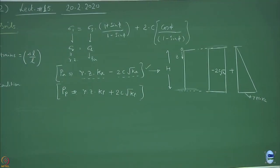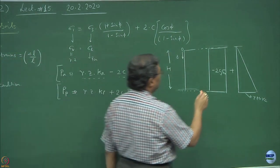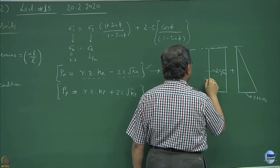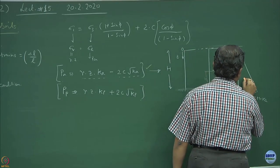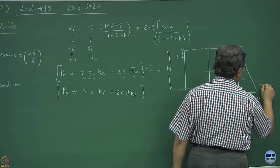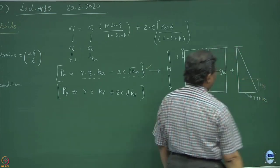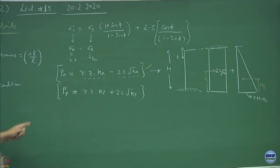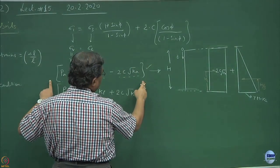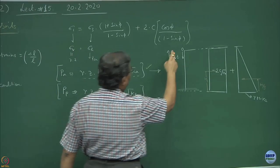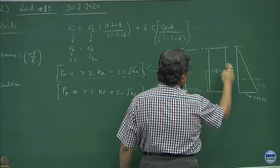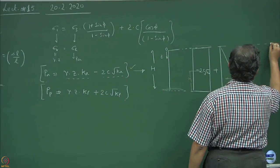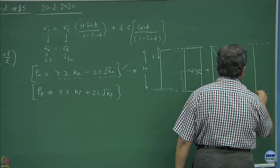You can analyze these problems very easily. If you have the pressure diagrams, you know what is the centroid of application of these forces. The rectangular part acts at h by 2, and the triangular part acts at h by 3. The total active earth pressure acting on the wall will have two components — clubbing them together gives the combined pressure distribution.